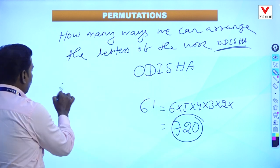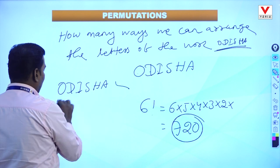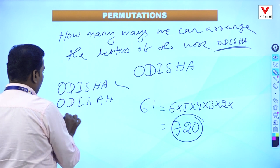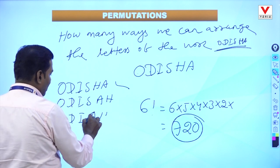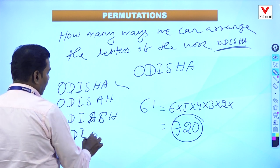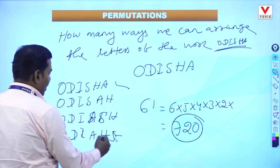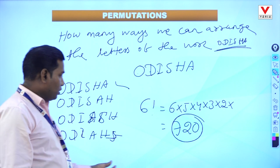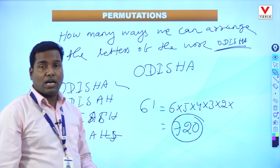Odisha can be arranged as ODISHA, ODISAH, ODIASH, ODIHAS, and so on — these are the arrangements. We can arrange the letters of Odisha in 720 ways. Another example: how many ways can we arrange the letters of the word Bihar? Bihar has letters B, I, H, A, R — 5 letters. This is your 5 factorial. 5 factorial means 5 into 4 into 3 into 2 into 1. 5 times 4 is 20, times 3 is 60, times 2 is 120. We can arrange letters of Bihar in 120 ways.